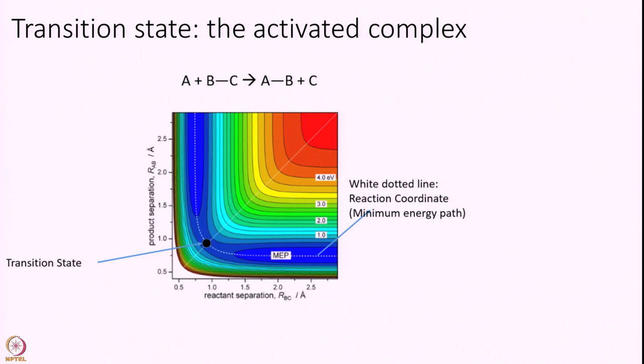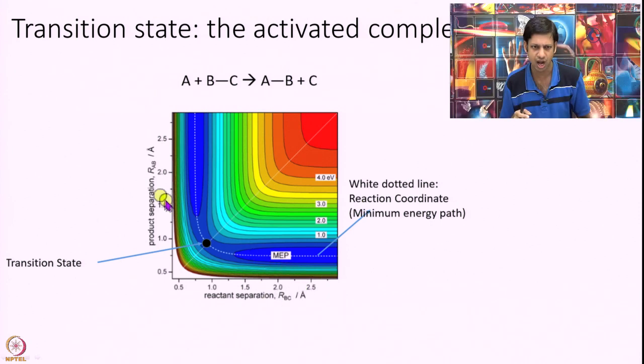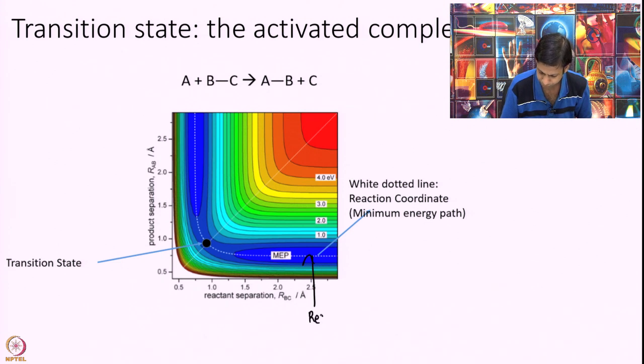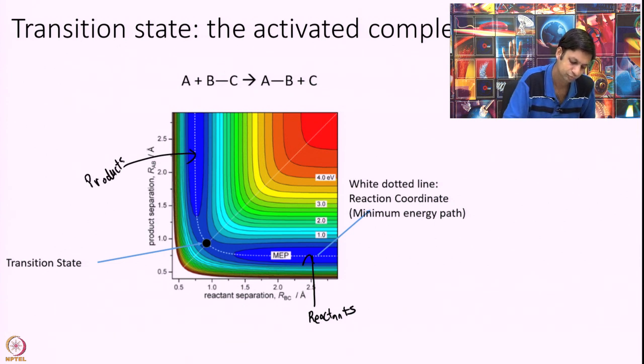Again, let me re-emphasize this point because it is so important. I have simply drawn a contour plot for a simple reaction of A plus BC going to AB plus C, this kind of a reaction. I have rBC coordinate here and rAB coordinate here. And I have again the reactants living here. This is reactants. This is products.